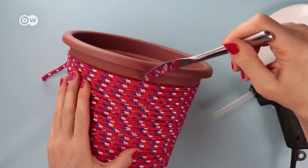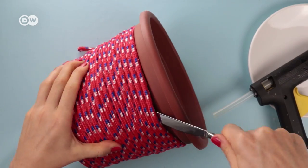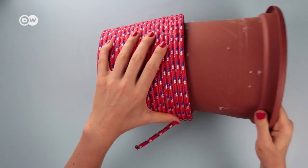Run a knife between the cord and the pot because the basket is sticking to it at a few spots. Then remove the basket from the flower pot.